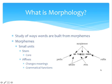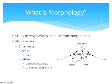So what is morphology? Morphology is the study of ways words are built from small units called morphemes. Morphemes are made up of two things: the stem, which is the core word, and affixes, which either change the meaning of the word or change its grammatical function. Here we have an example of the word 'unhappiness.' The three morphemes are 'un,' 'happy,' and 'ness.' 'Happy' is the stem word, the prefix is 'un,' and the suffix is 'ness.' Un and ness are both affixes.